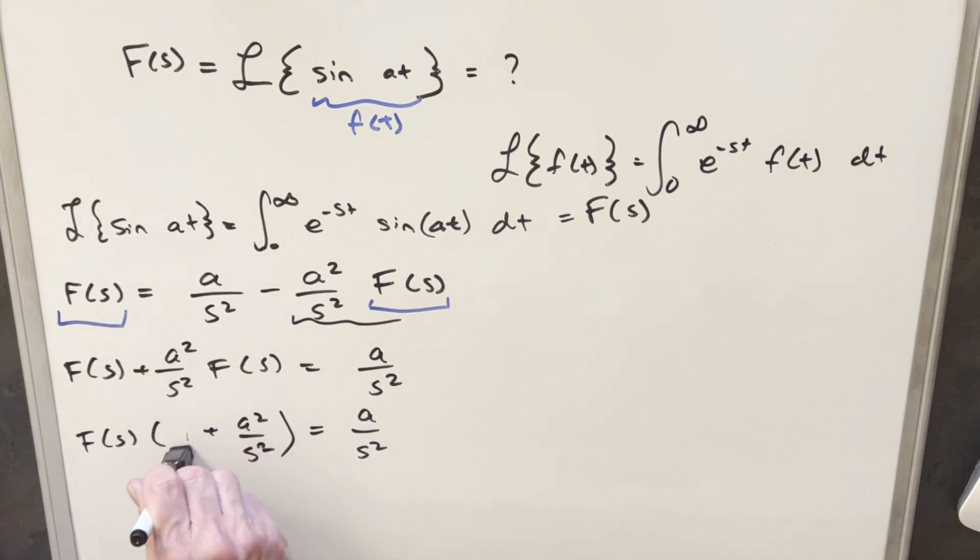But now for this one right here, let's just get a common denominator. I'm going to write this one as s squared over s squared. So then what we're going to have is F of s. Adding these together with the common denominator, we get s squared plus a squared over s squared.